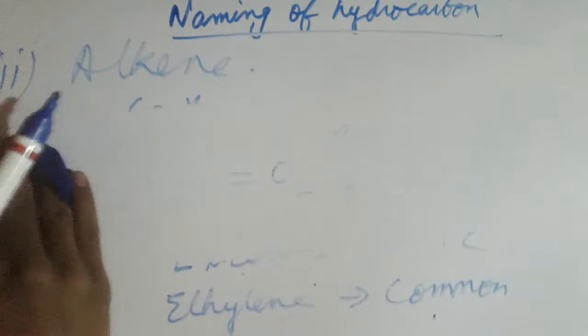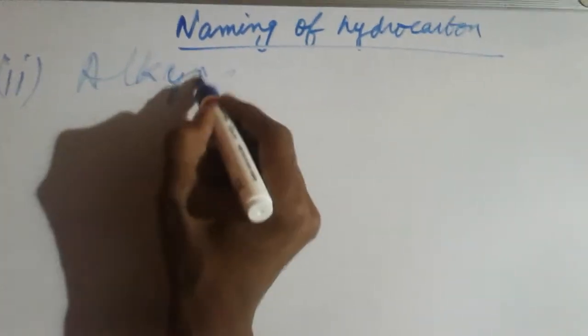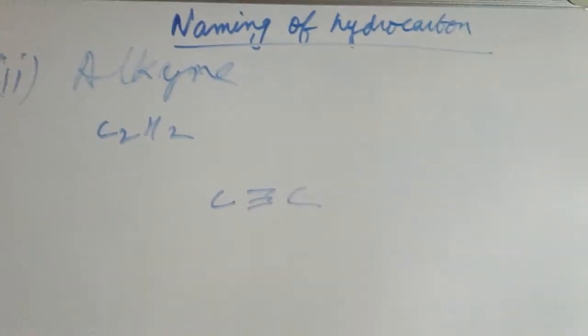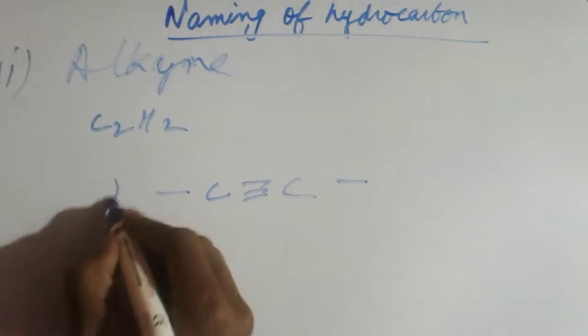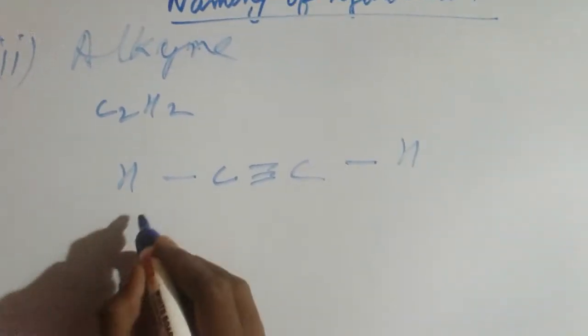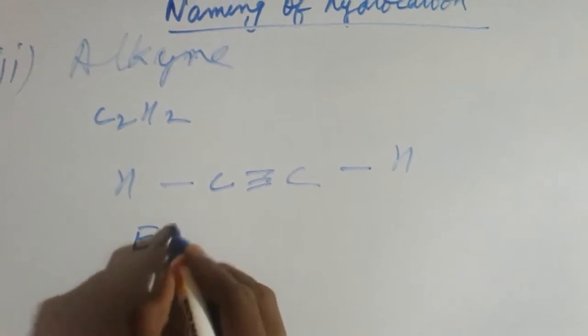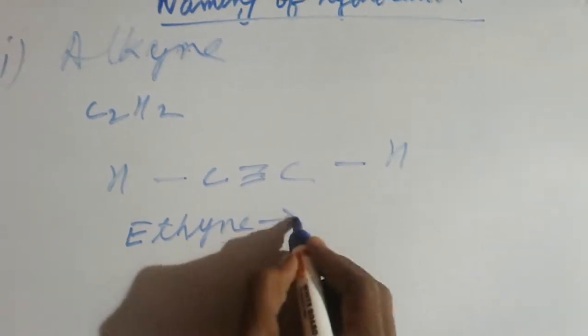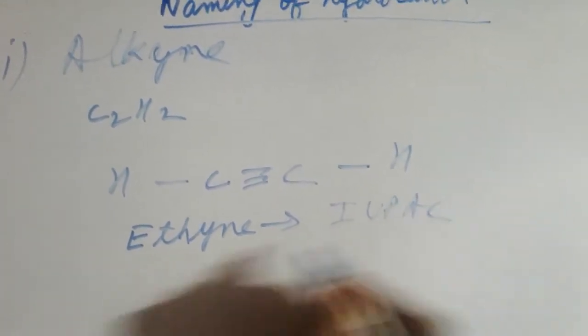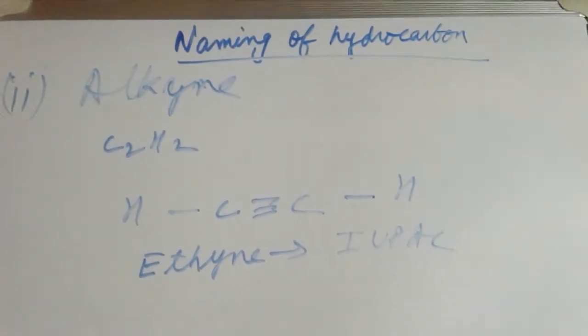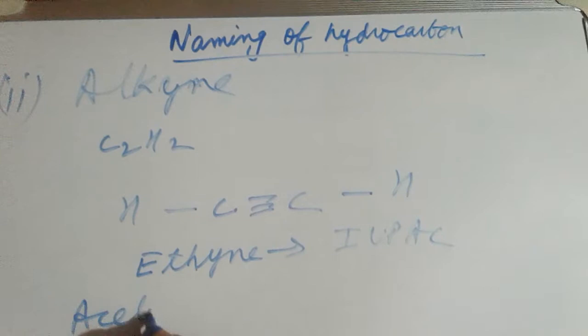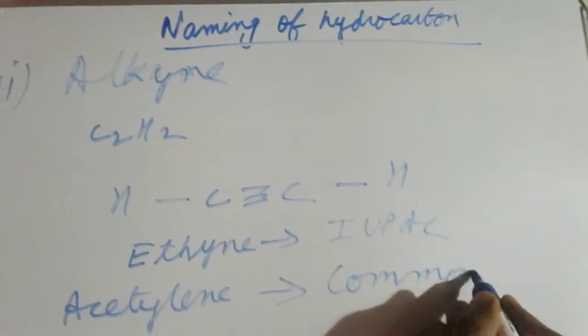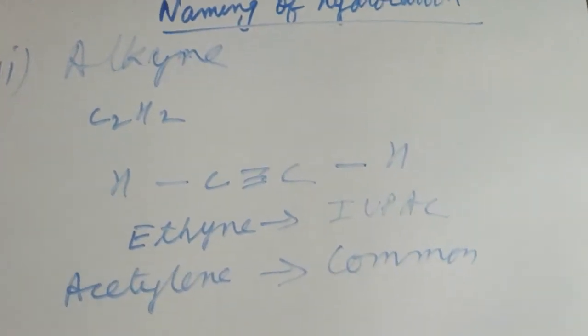Now we'll discuss an alkyne. The first alkyne is C2H2, with two carbon atoms connected by a triple bond. The prefix is 'eth,' and the triple bond gives '-yne.' The IUPAC name is ethyne, and the common name is acetylene.